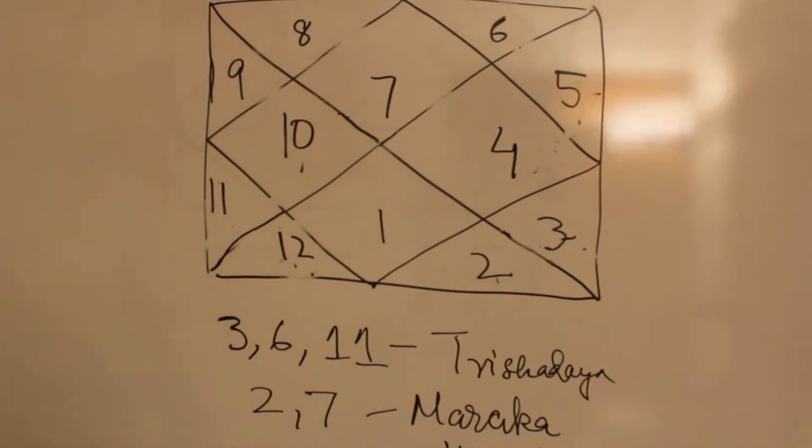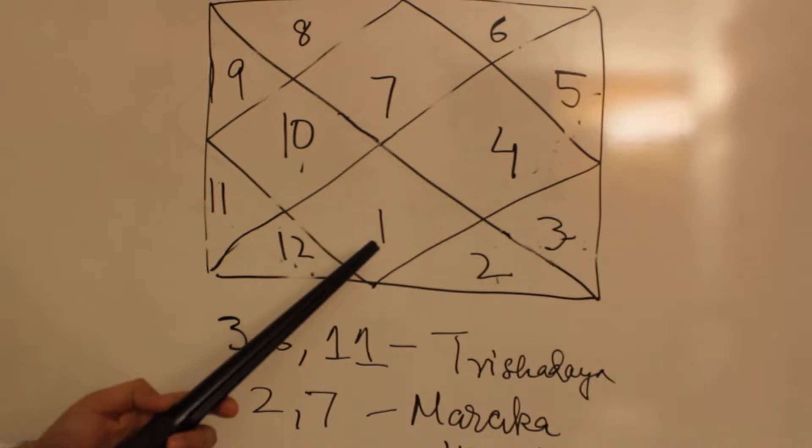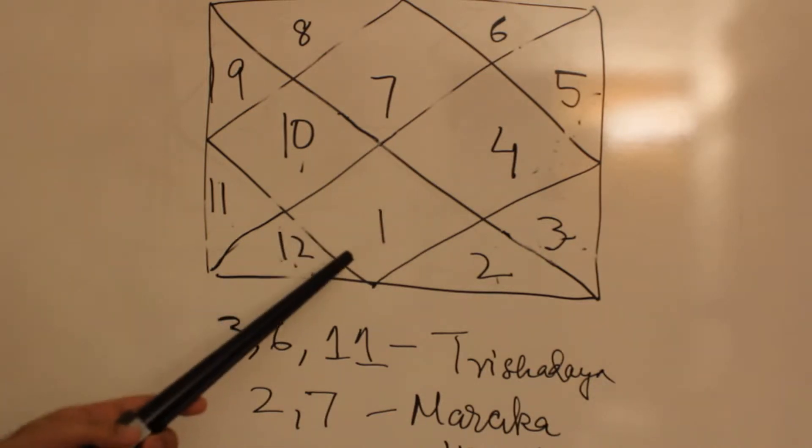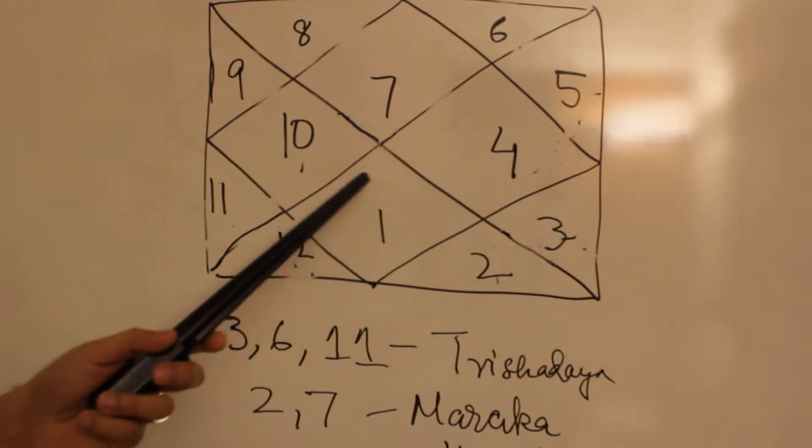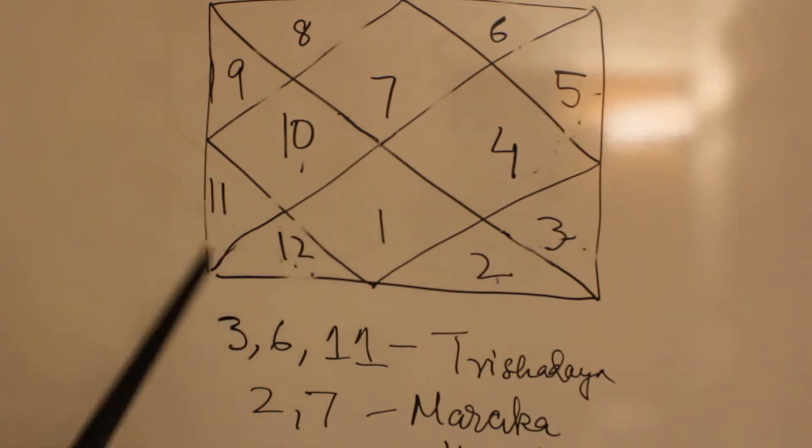Now coming on to Mars. Mars is the owner of the second house and the seventh house. Mars here is a maraka, a double maraka. Being the owner of the seventh house, it loses its malefic nature but then it becomes a maraka and is considered a malefic for the Libra ascendant.